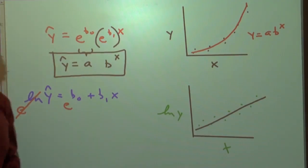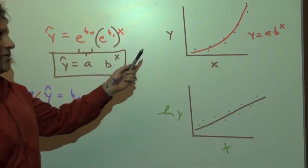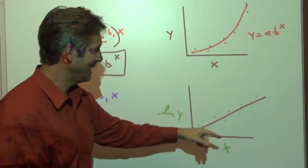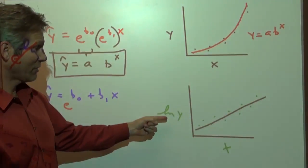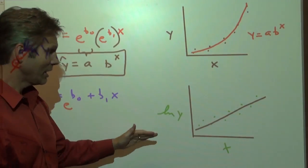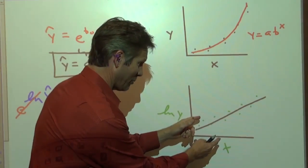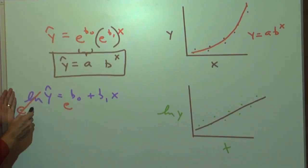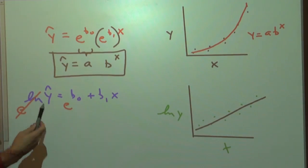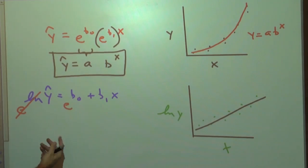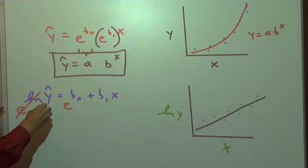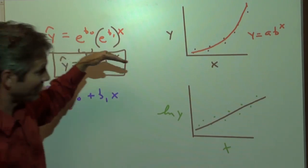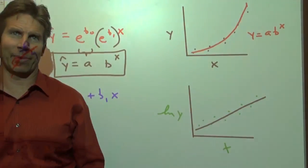Let's see that again in instant replay. Take the original data, transform it to achieve linearity — a good transformation is taking the natural log of the y's. Run a line of best fit through the transformed data. But that line isn't relating y to x; it's relating the natural log of y to x. So let's undo natural log by raising both sides as a power of e. That brings us to an exponential function, and that exponential function should fit the original data the best.